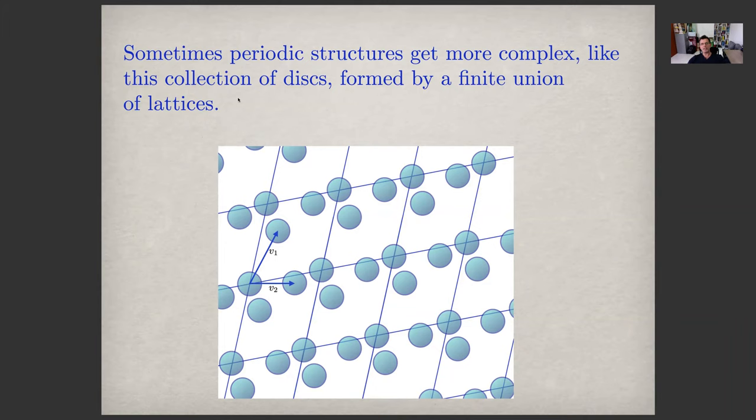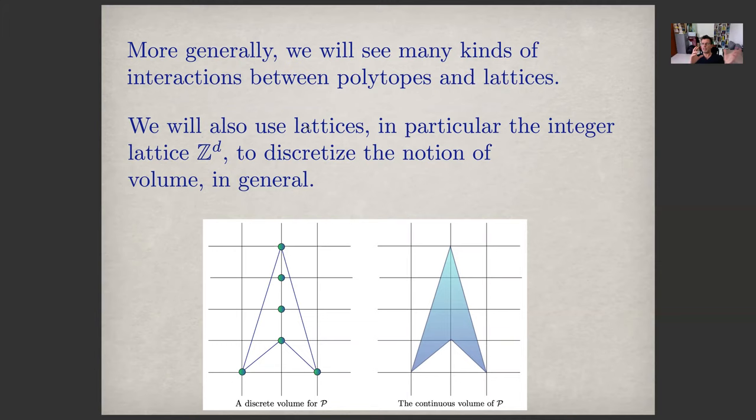And sometimes periodic structures get more complex, like this collection of disks formed by a finite union of lattices. More generally, we will see many kinds of interactions between polytopes and lattices.